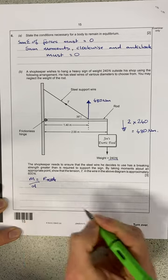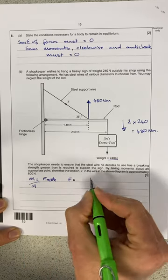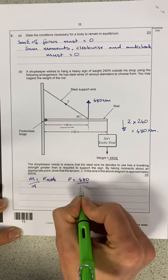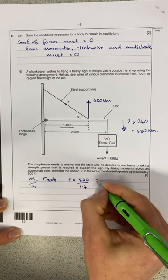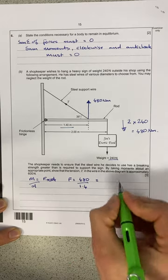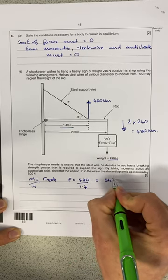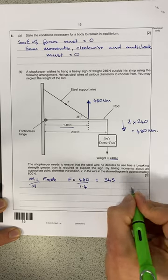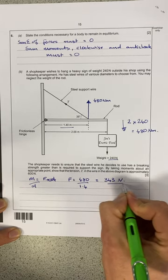So the force is going to be equal to 480 divided by, there's my distance, 1.4. And when I run that through my calculator, I get that that's equal to 343. There's some decimals as well, but we're going to round it off, and that's going to be newtons because we're dealing with a force.